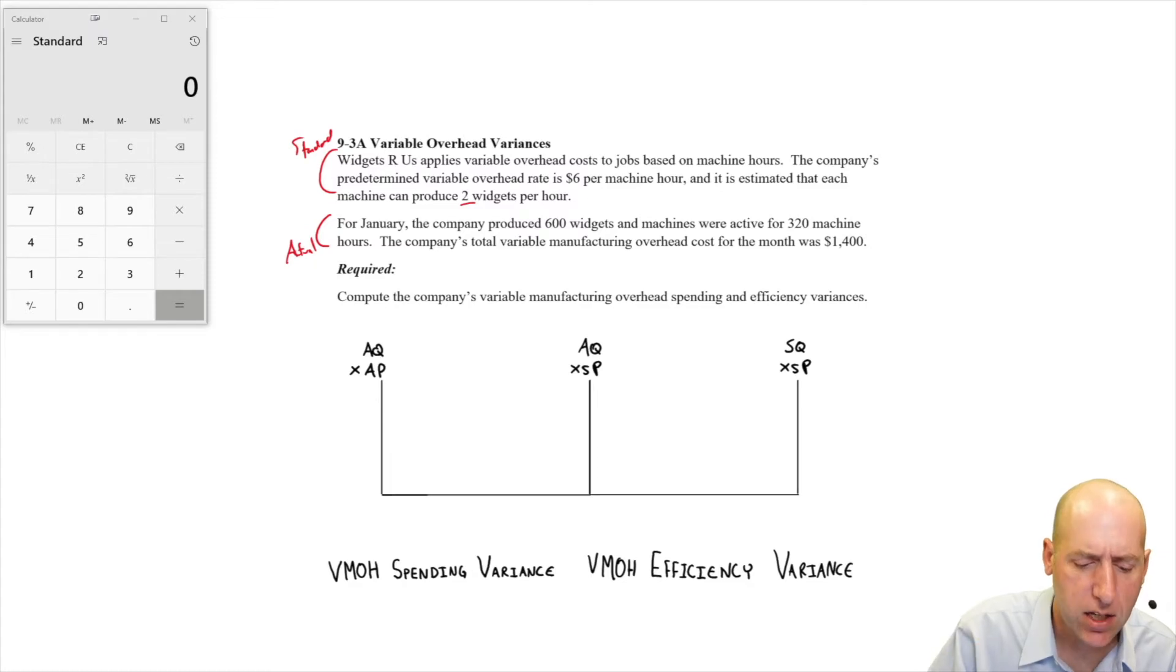AQ, the actual number of hours that we worked or that we used our machines for, whatever we base our overhead on, and it's usually going to be hours. And so what was the actual number of machine hours? In this case, it was 320. So let's use that 320 hours.